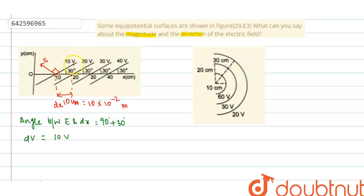Because 20 volt minus 10 volt is 10 volt, right? So E dot dx is minus dv.